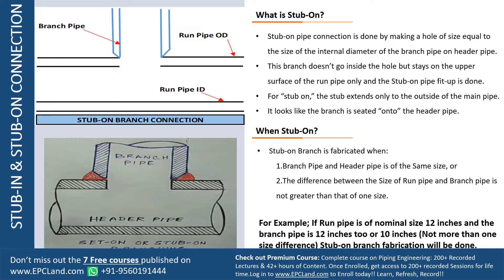When we are going for stub-on connections, there are two scenarios. One, when the size of the branch is equal to the header size. Second, when the branch we are trying to take out is one size less than the header size. Whenever there are these kinds of scenarios, we go for stub-on connections. For example, if we have a header pipe of 12 inch and we want to take a 12 inch branch, or if the branch size is 10 inch — which is not more than one size less — then we go for stub-on type of fabrication.